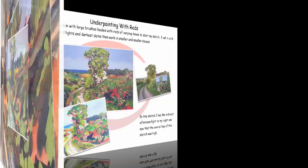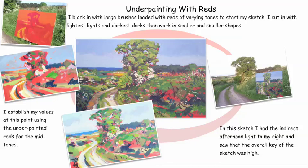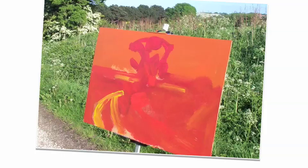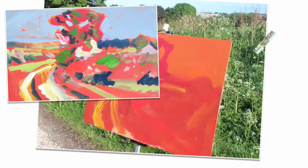Here's another underpainting with red from the same location as the previous one, and what I've tried to get across here is the brightness of the greens. So it was handy referring back to this red underpainting to get these high key tones and colors to sort of jump out.